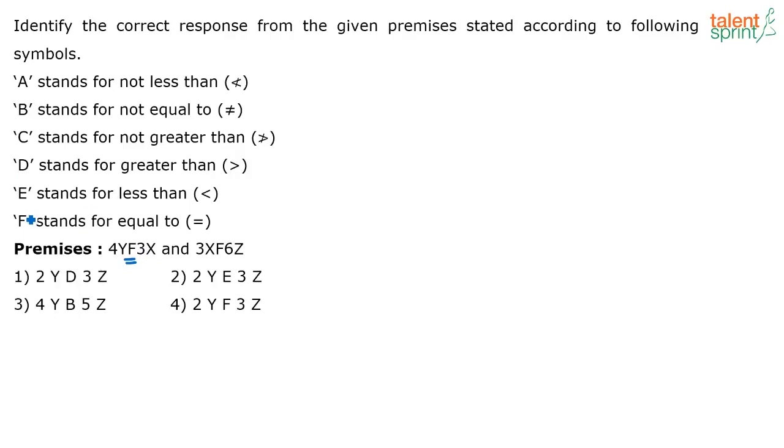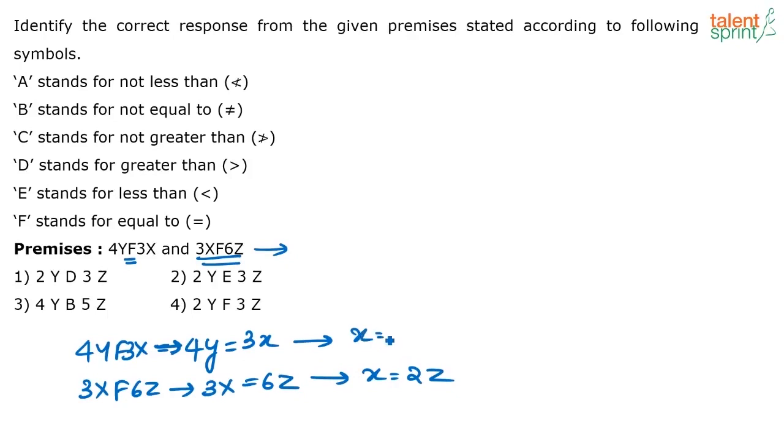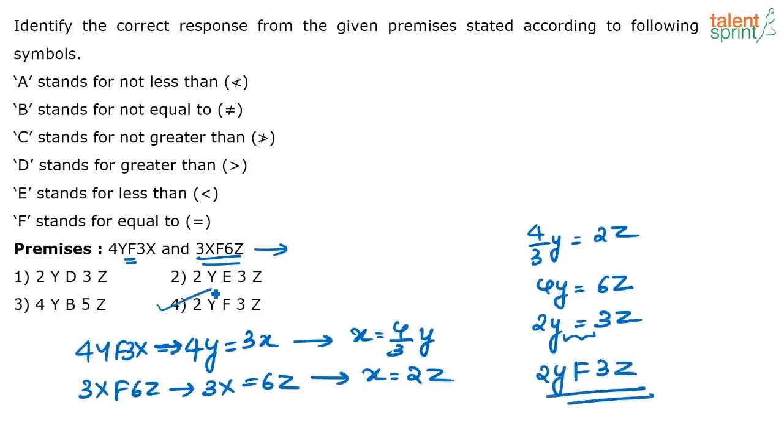What do you know? You know F stands for equal to. So 4YF3X, this means 4Y is equal to 3X. Similarly when you have 3XF6Z, 3X is equal to 6Z, or I can say X is equal to 4 by 3Y. So what is the relationship between Y and Z? The relationship between Y and Z is 4 by 3Y that is equal to 2Z, or 4Y that is equal to 6Z, or I can say 2Y that is equal to 3Z.